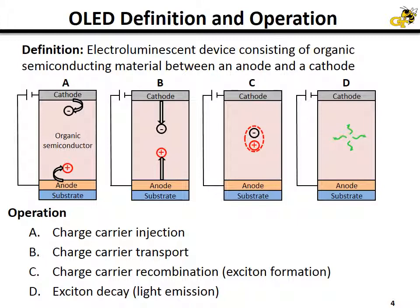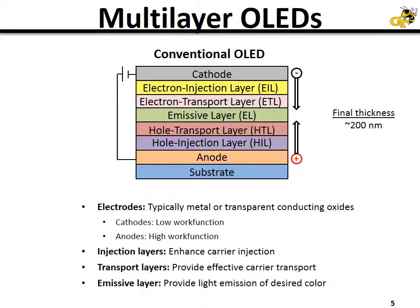These charges become coulombically attracted in an excited state known as an exciton, and these excited states can decay, resulting in the emission of the photons that you see. Modern-day OLEDs are multi-layer devices with a total thickness of about 200 nanometers.